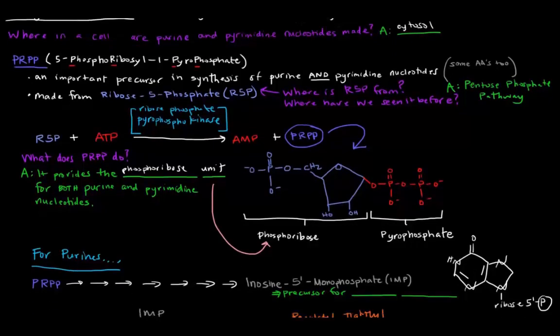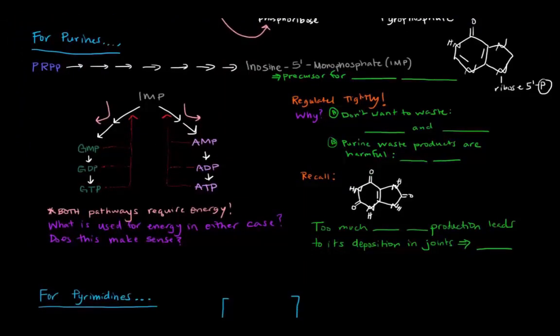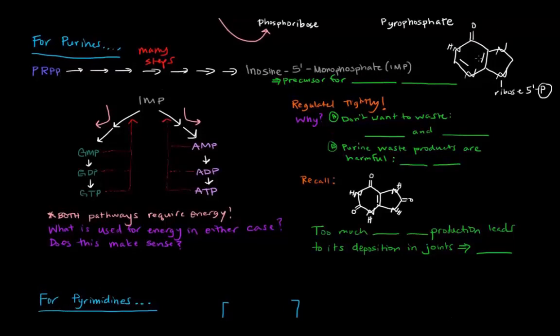So how does PRPP do that for purines, specifically? For purines, PRPP is involved in a long pathway with many steps. And what's important, essentially, is that PRPP is the precursor for this thing called inosine 5' monophosphate, which I've actually drawn here. This is inosine 5' monophosphate or IMP.